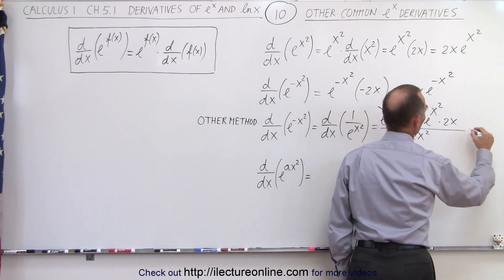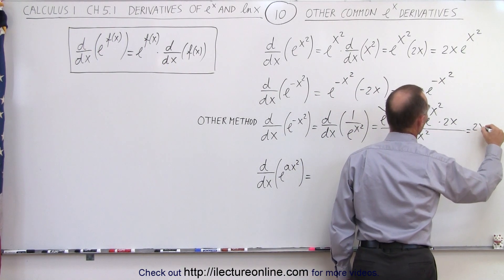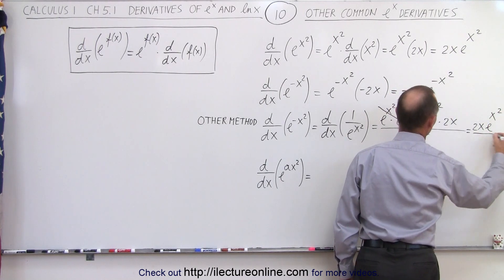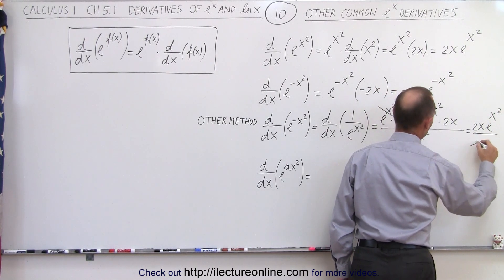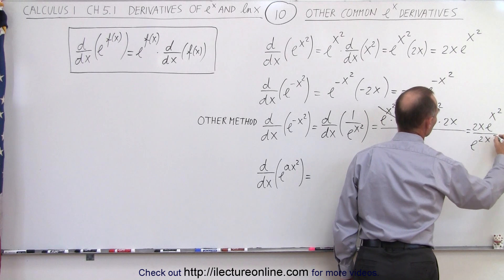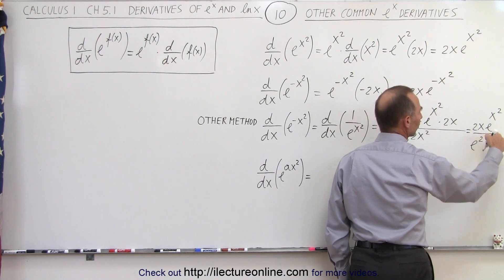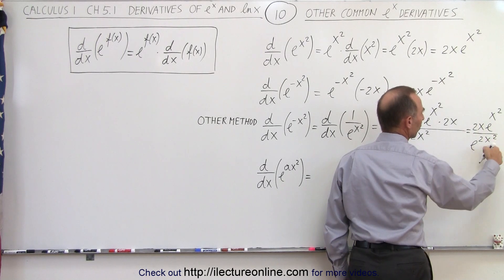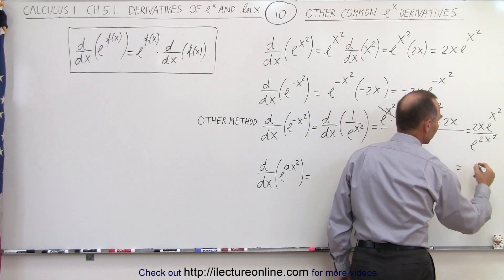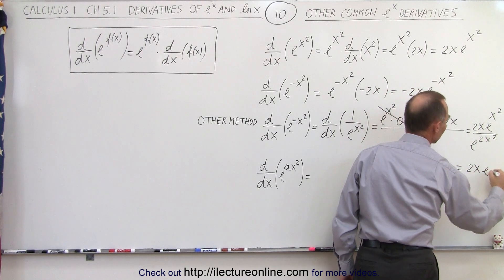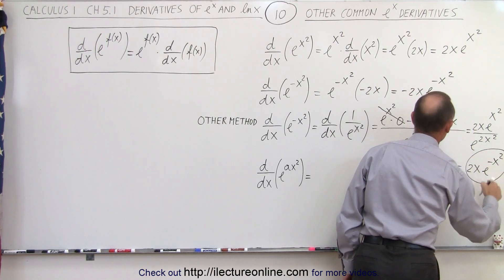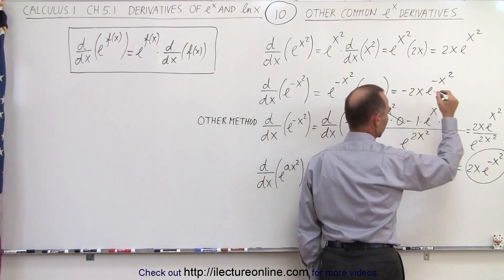Here we end up with, this is equal to 2x e to the x squared divided by e to the 2x squared. And when we divide the denominator into the numerator, we subtract exponents, x squared minus 2x squared, leaves us with 2x e to the minus x squared, which should be the same result that we got over here.